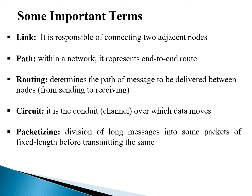Path is the total route specified from source to destination, carrying information from source to destination. Routing is determining the path of the message to be delivered between two connecting devices — from sender to receiver. There exist many paths, and determining which path the message takes is called routing. The next term is circuit or conduit, also called a channel — a physical path through which data travels. After that, packetizing means dividing a message into fixed-length packets or small chunks.